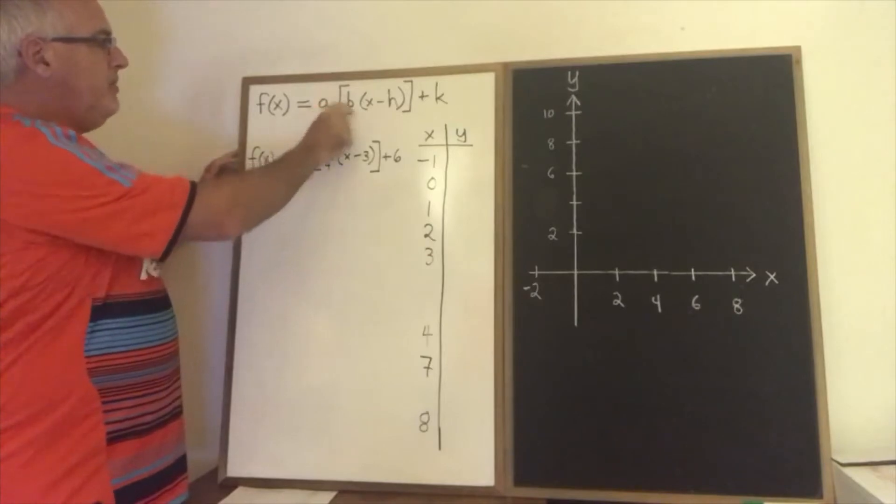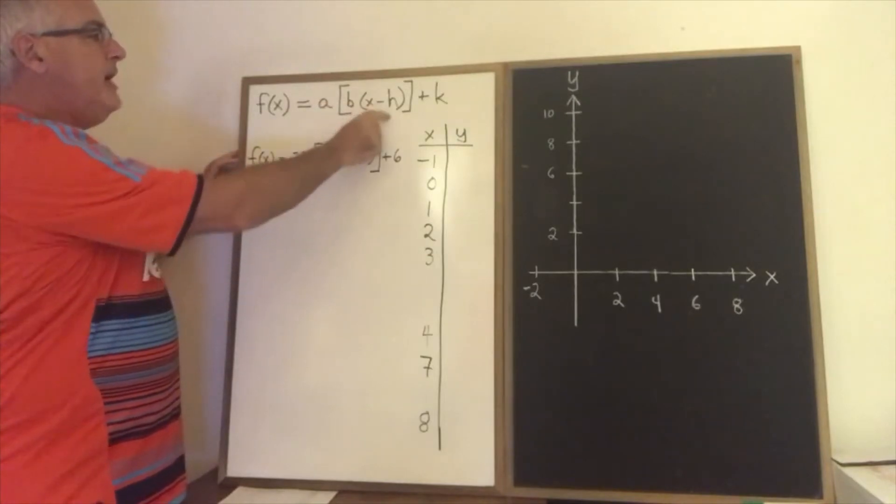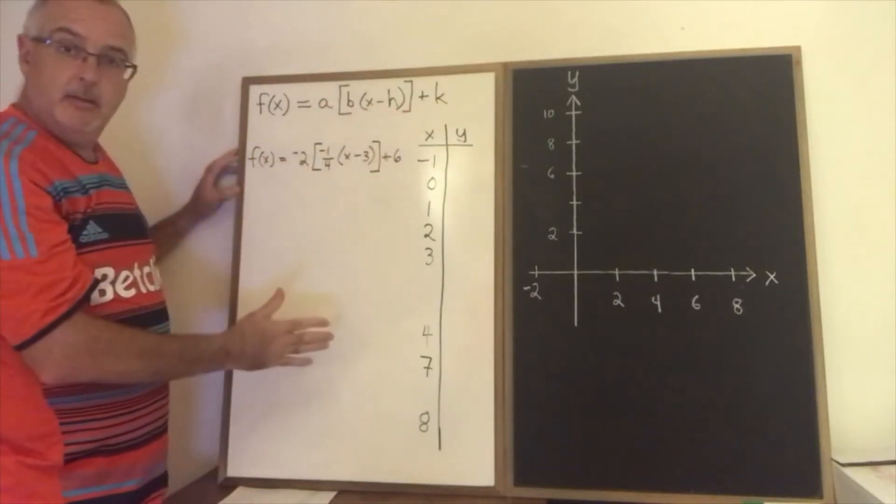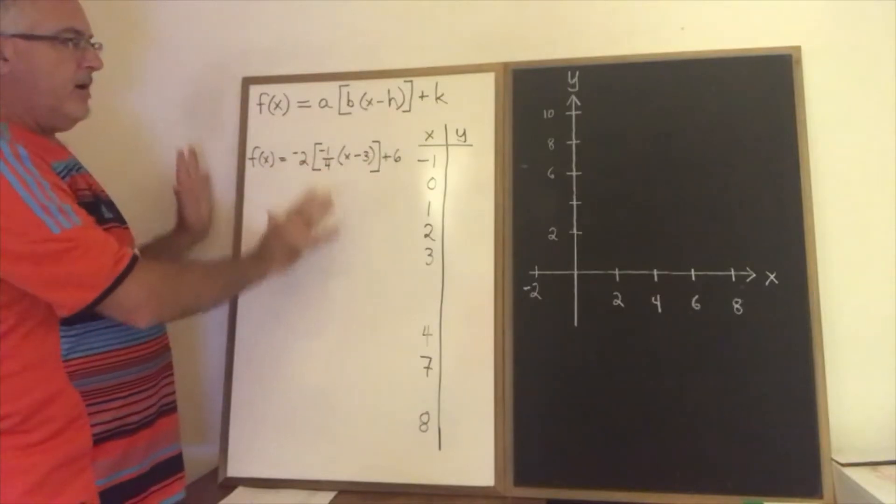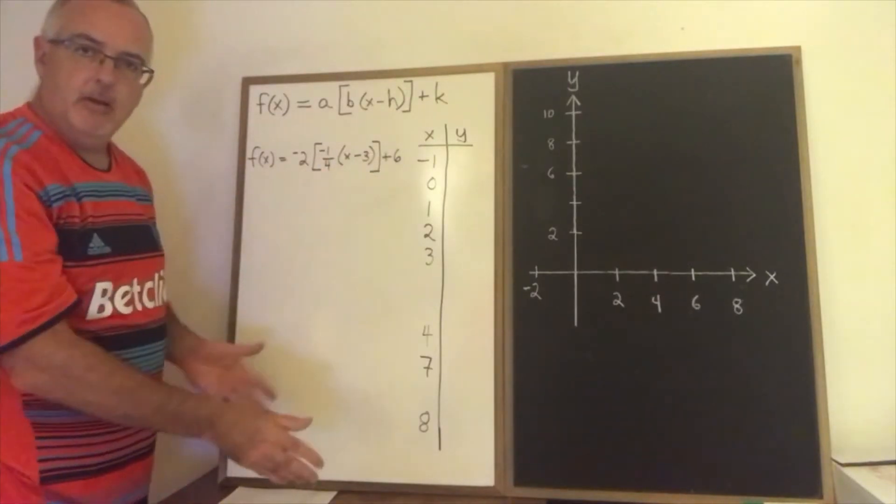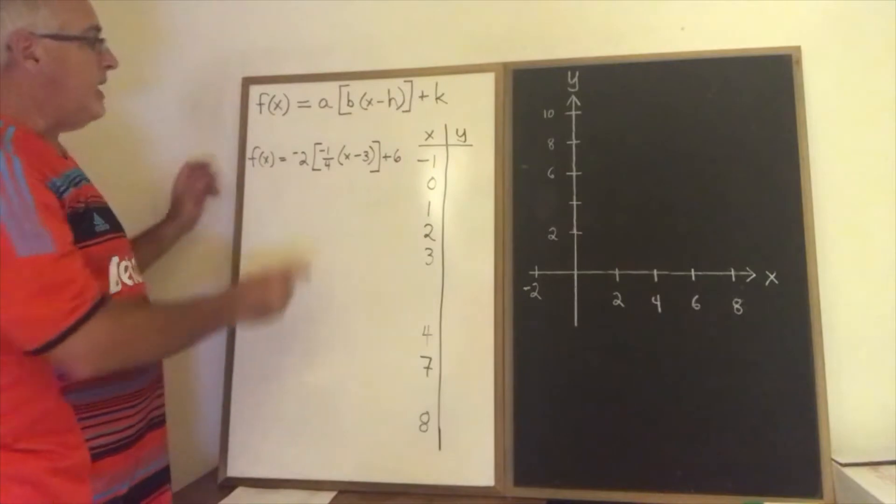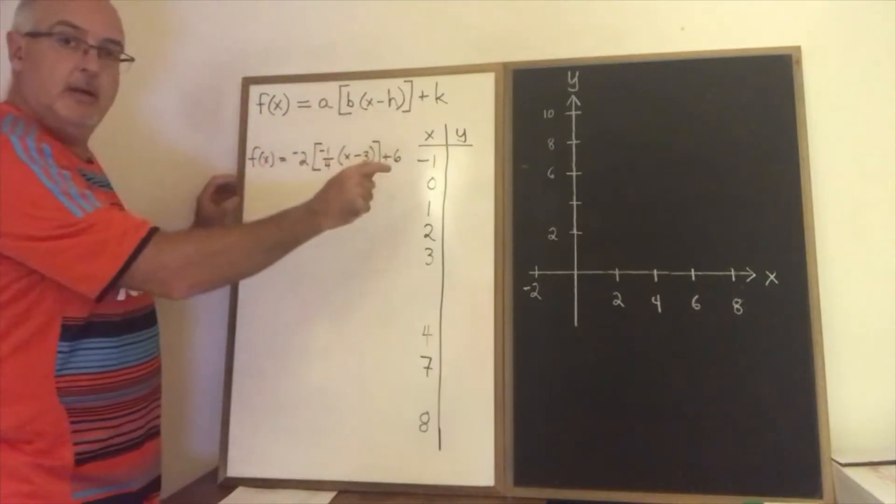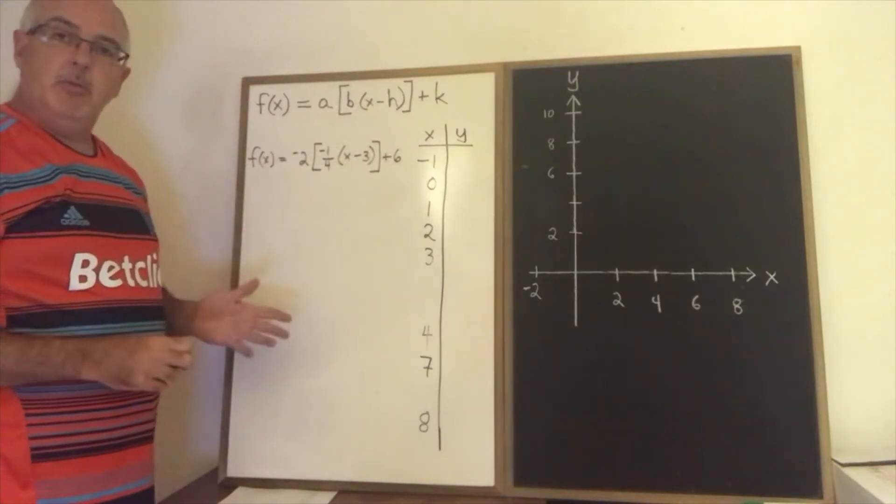a is negative 2, b is negative a quarter, h is 3, and k is 6. But I'm going to try graphing this using a table of values by trial and error instead of by using the parameters. Use of parameters will be a different video.